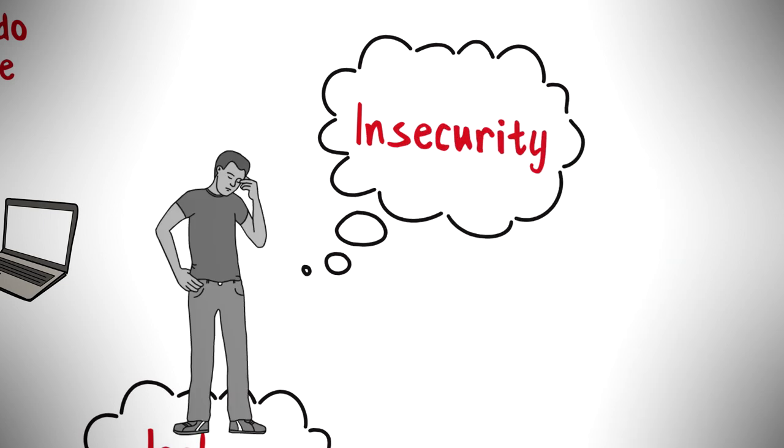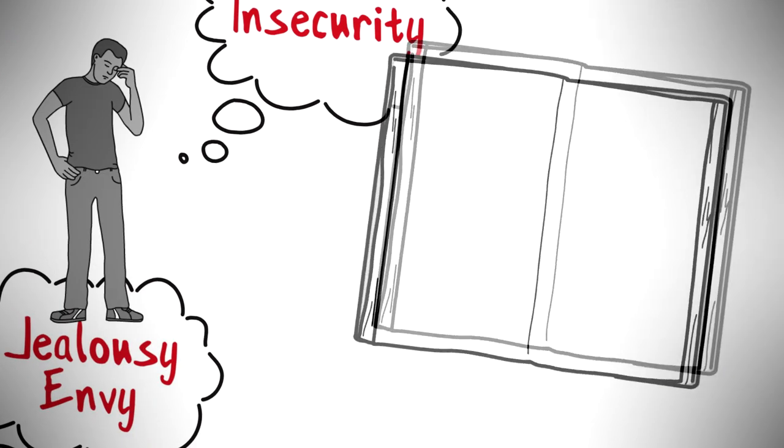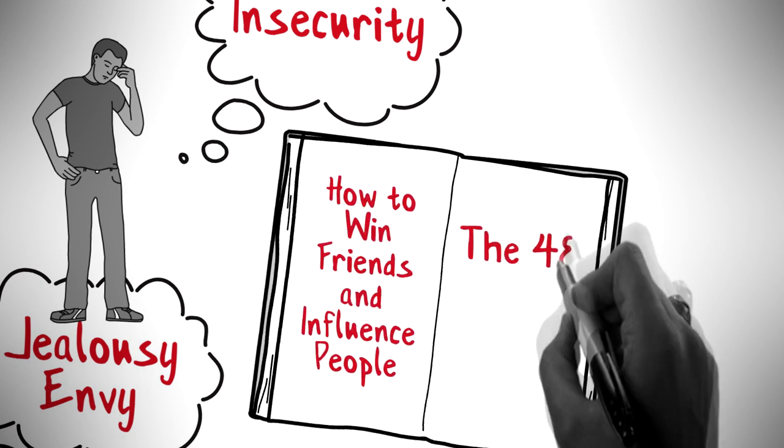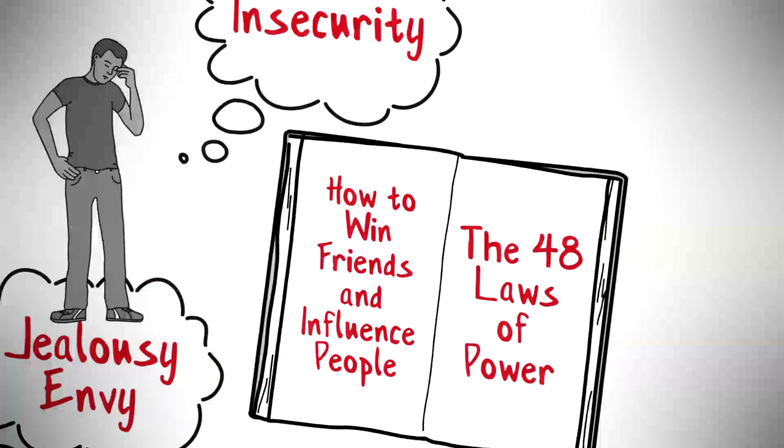I see this all the time. Otherwise, intelligent people who are also willing to put in all the hard work, getting thrown off the path to mastery, and all because they don't cultivate any social intelligence. If you had read Carnegie's How to Win Friends and Influence People and Green's The 48 Laws of Power, you wouldn't have made any of those mistakes.